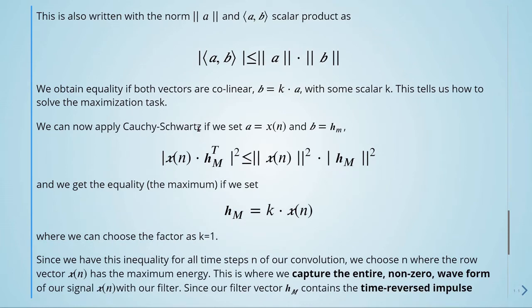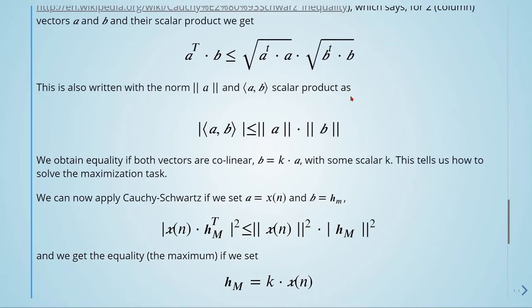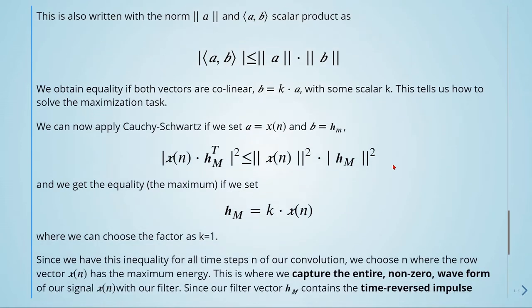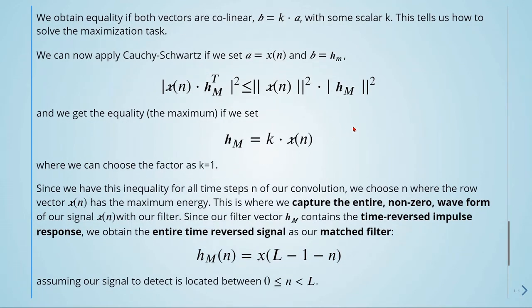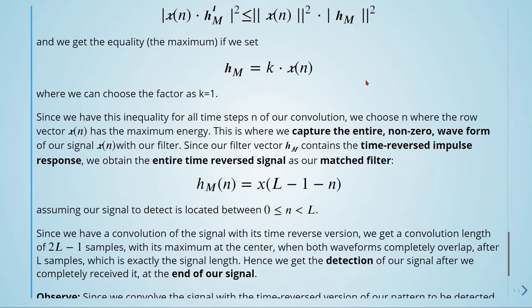We can now apply the Cauchy-Schwarz if we set A equals to X of N and B equals to H_M. So we replace here A by X of N here and B by H_M here. We are getting this. And we get the equality, the maximum, if we set H of N equals to K times X of N, where we can choose the factor as K equals to 1. Since we have this inequality for all time steps N of our convolution, we choose N where the row vector X has the maximum energy.